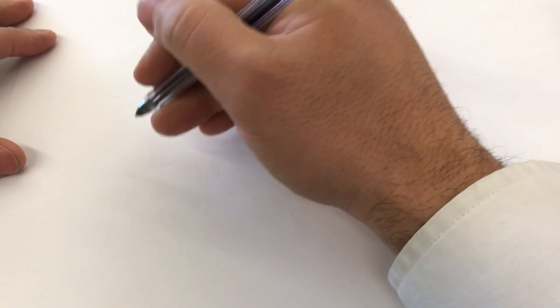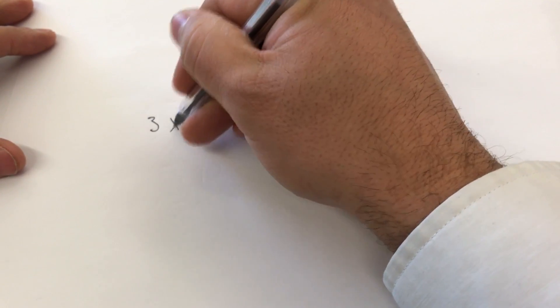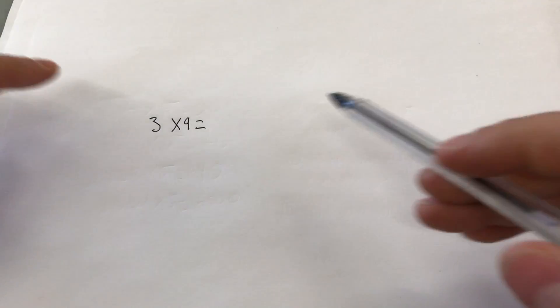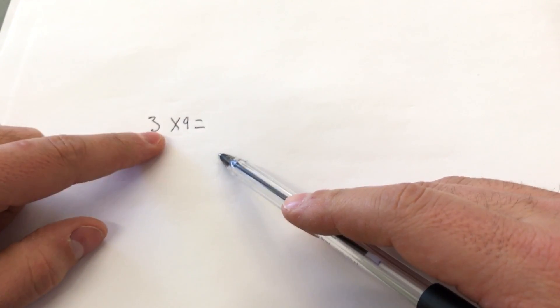Let's just put an example on the piece of paper here. Let's say we were going to do 3 times 9. So what you want to do is take the non-9 number, which is 3 in this case.